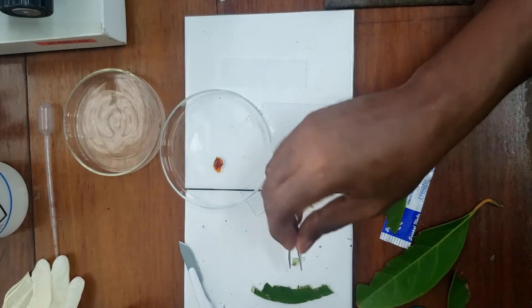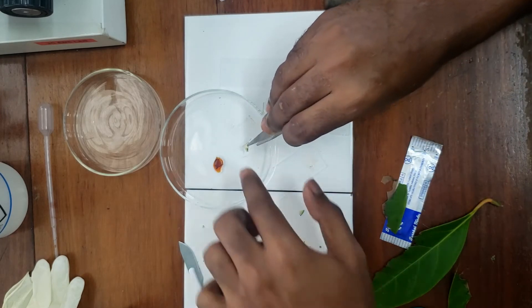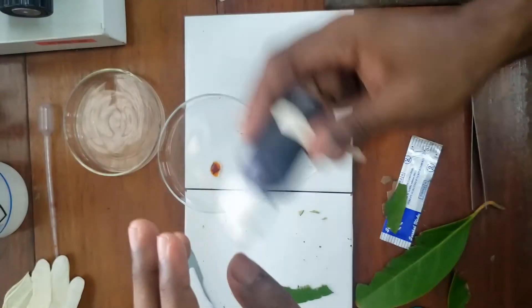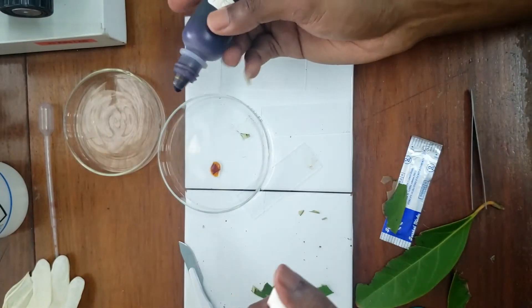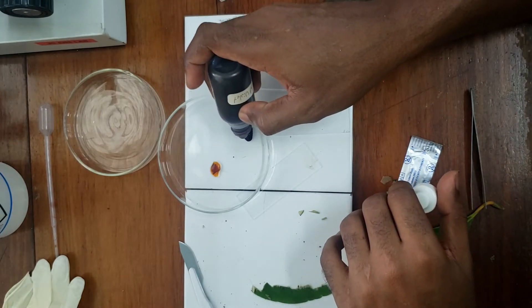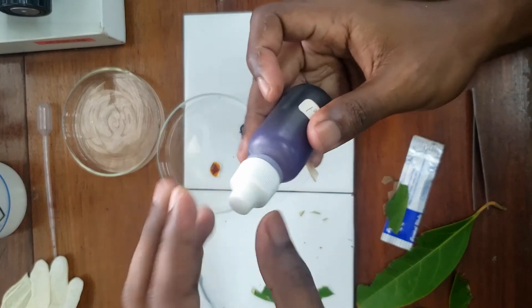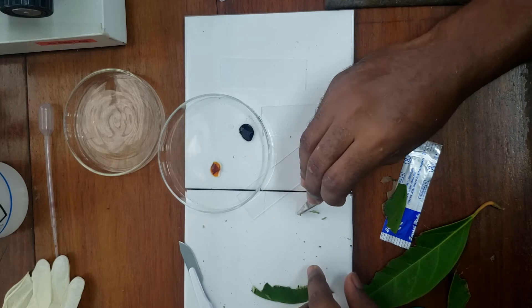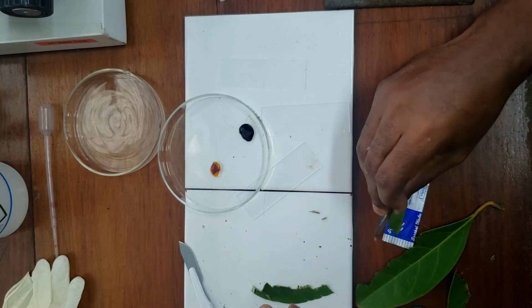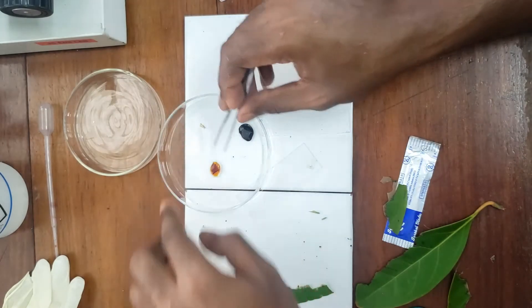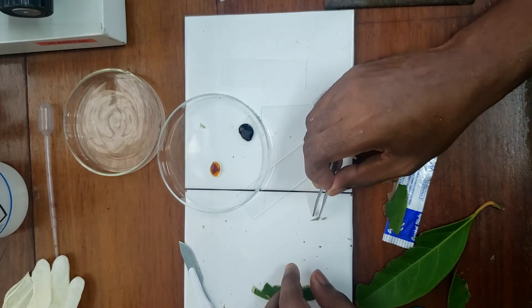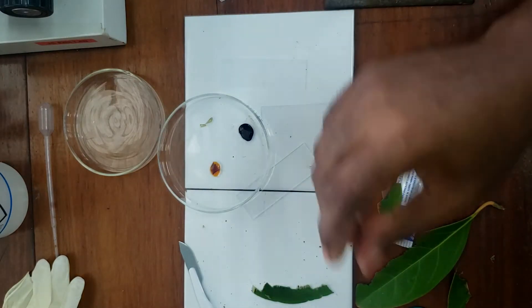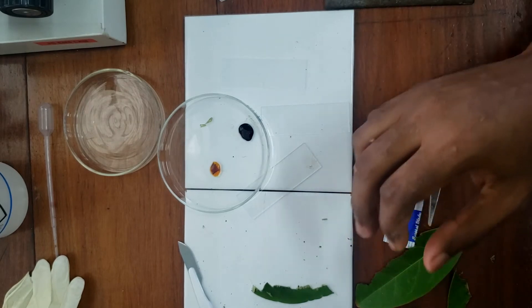I'll take another piece of that leaf section and I'll try it with some crystal violet. And then the last piece, I want to try with some methylene blue.